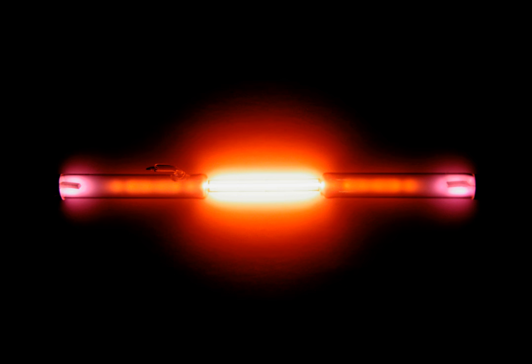Period 1 elements obey the duet rule in that they need two electrons to complete their valence shell. The maximum number of electrons that these elements can accommodate is two, both in the 1s orbital. Therefore, period 1 can have only two elements.